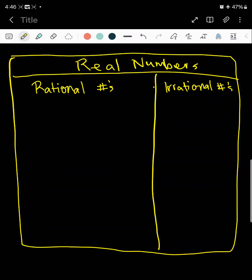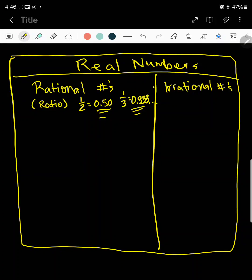On the left side of the Venn diagram, you're going to have rational numbers. Rational just means that it could be written as a ratio, and a ratio is a fraction. So for example, the fraction 1/2 is the same thing as 0.50. And the fraction 1/3 — this right here is known as a terminating decimal. If it's a fraction that's converted into a decimal and you see that there's a repeating pattern like this one, this one right here is called a repeating decimal. So these are all rational numbers.